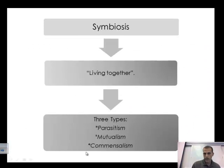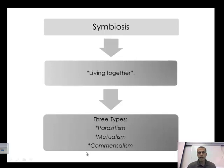Another idea we've discussed before is symbiosis — symbiotic relationships, where organisms are living together. There are three different types: parasitism, mutualism, and commensalism.